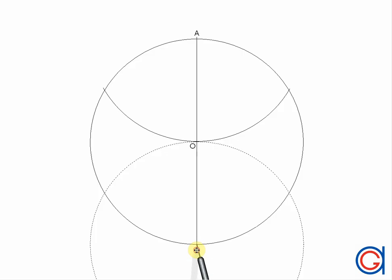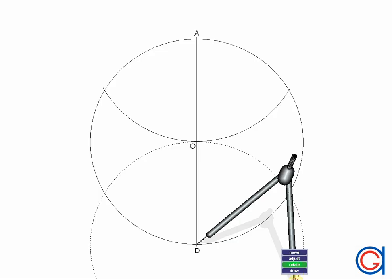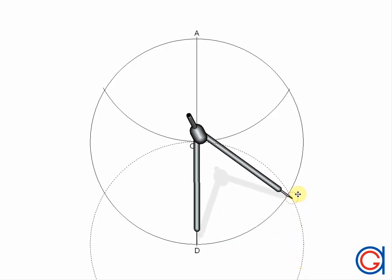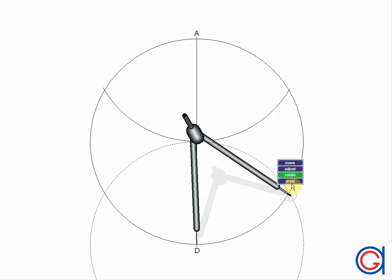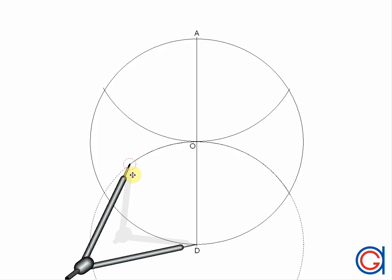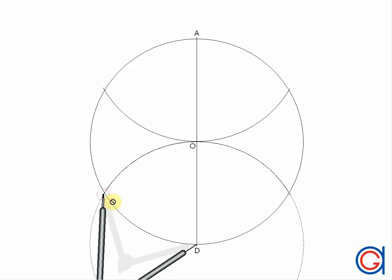Now, with our compass centered on D, we repeat this process, and we cut the circle again at two points, as shown here.